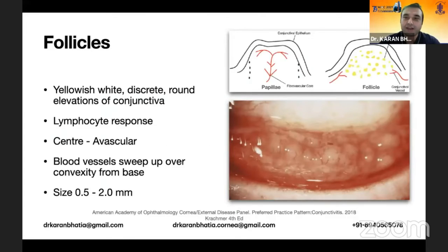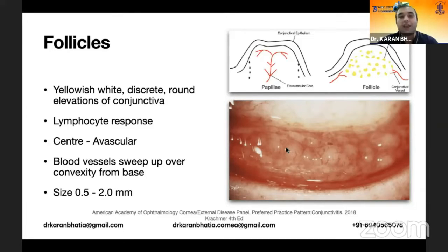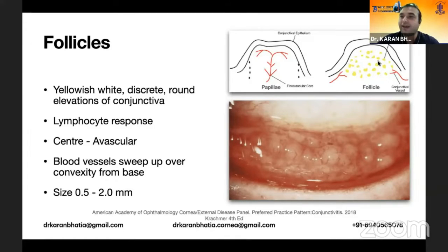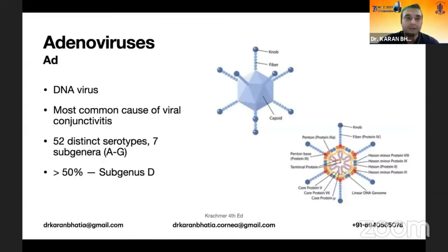Conjunctivitis is characterized by the presence of follicles, which are yellowish-white discrete rounded elevations of the conjunctiva. As you can see in the picture, they appear like boiled sago grains and are basically a lymphocytic response. The center is avascular and the vessels are at the periphery. The size of the follicle is generally between 0.5 to 2 millimeters.